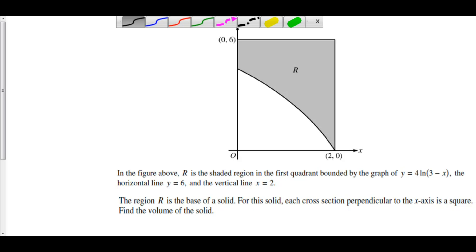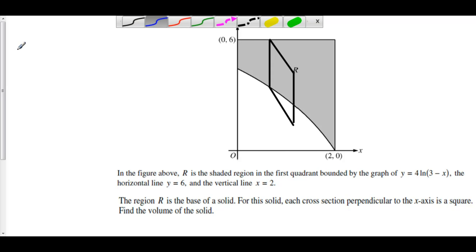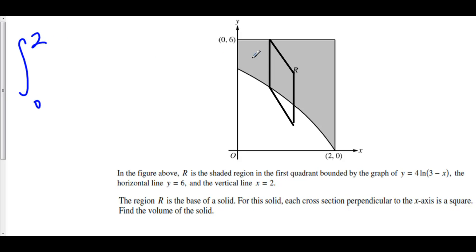Let's construct our cross-section to visualize what's going on. From y equals 6 down to y, we have the side of our square, and our square is coming out of the board. We can take the integral from 0 to 2 because our cross-sections are perpendicular to the x-axis. So let's set up our integral from 0 to 2, taking the integral of the areas of each of these cross-sections in R. These cross-sections are squares, and the area of a square is side squared.